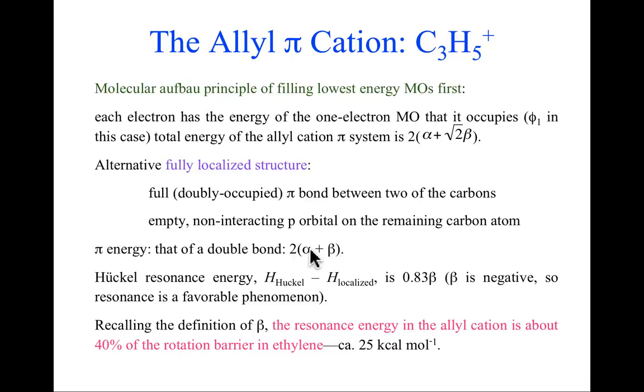So the difference between these two energies, the delocalized pi bonding allyl system, and a localized pi bond in a carbocation, is two alpha. We'll cancel out two alpha here. But here I have two times the square root of two beta versus two times beta. Well, remember beta is a negative number, it's favorable, and the square root of two is bigger than one. Square root of two is about 1.4 if we truncate after the first decimal place. So I'll have a factor of about 0.8, and to be particular, 0.83 beta, more stabilization in the Huckel delocalized allyl cation than I would in a fully localized system. So resonance, the delocalization, is a favorable phenomenon in the allyl cation, and it's favorable by 0.83 times beta. And you could just go back and look at how many electron volts or kcals per mole or whatever you like beta is. And when you do that, you'll see that that stabilization is 25 kcals per mole.